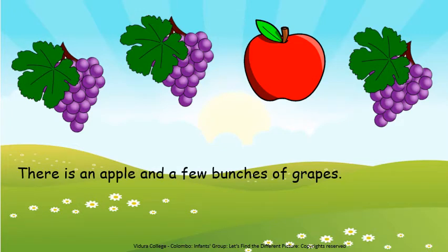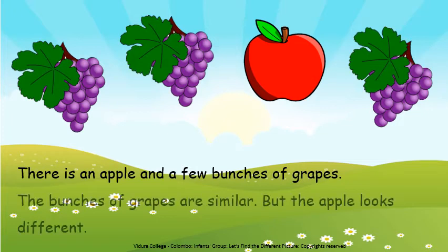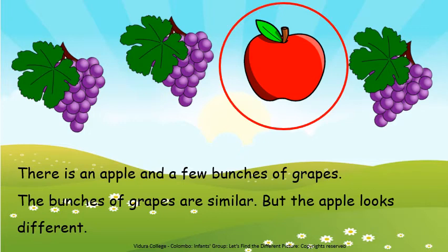There is an apple and a few bunches of grapes. Right? The bunches of grapes are similar. But the apple looks different. Can you all see, children? So, what is the different picture here? The different picture is the apple. I circled the apple. Because the apple is the different picture here.